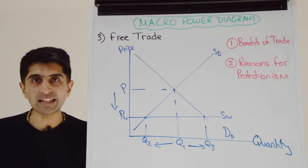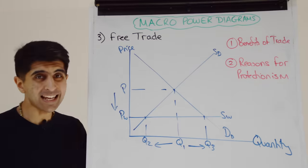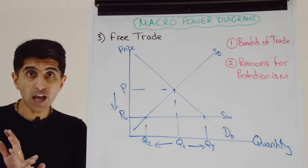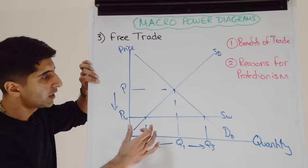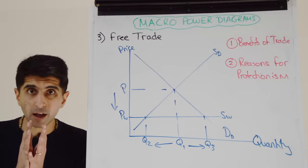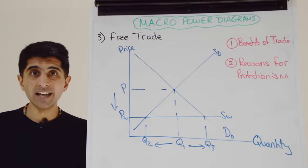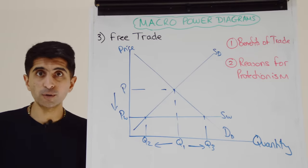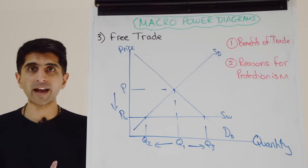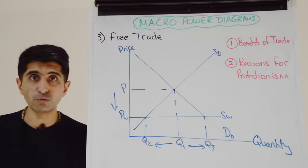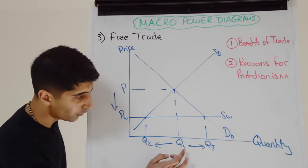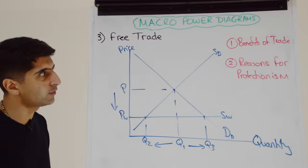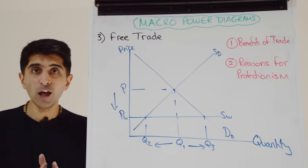Number three is the free trade diagram — another diagram many students don't know exists. It's basically your tariff diagram but without a tariff. The key difference is we show the equilibrium price and quantity in a closed economy, then move towards PW where world suppliers have the comparative advantage. This diagram is great because we can link it to the benefits of trade: allocative efficiency, lower prices, higher consumer surplus, higher quantity and choice, and higher economic growth from exports. But we can also see reasons for protectionism — domestic producers losing quantity, lower revenues, domestic unemployment, since labour is a derived demand.